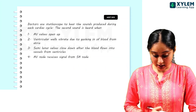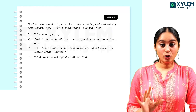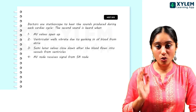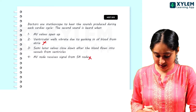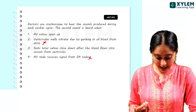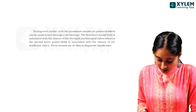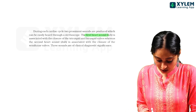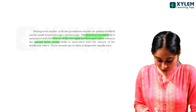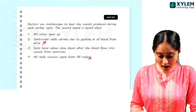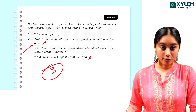Doctors use a stethoscope to hear sounds produced during each cardiac cycle. The second heart sound is heard when semi-lunar valves are closing down after blood flows out. From NCERT: the first heart sound is associated with closure of the tricuspid and bicuspid valves, whereas the second sound is due to closure of the semi-lunar valves.